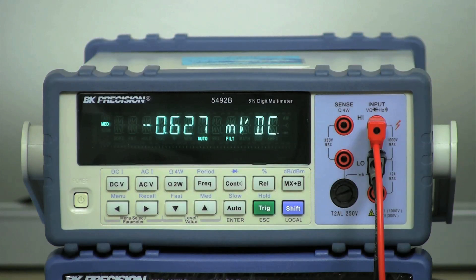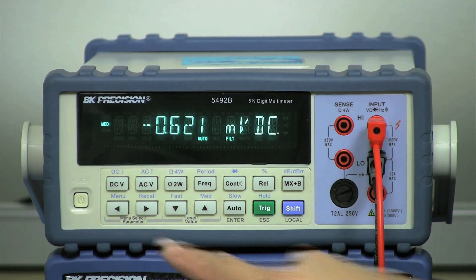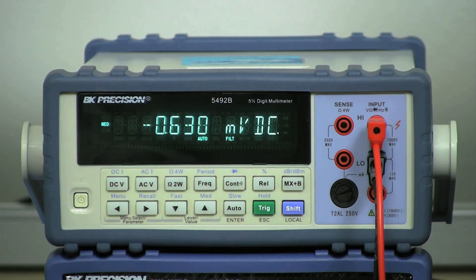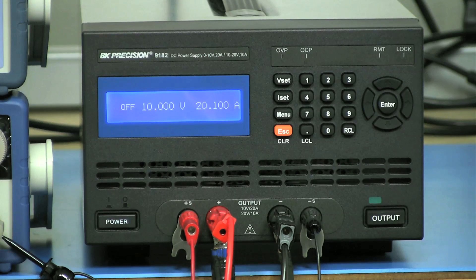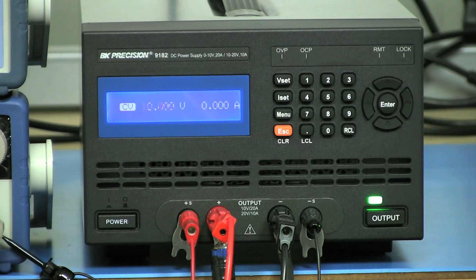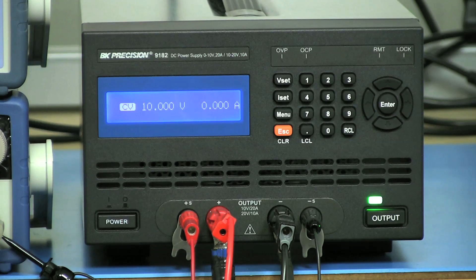Now on the multimeter, I will simply press DCV to select DC voltage measurement function. Without the load turned on, I will press the output button of the 9182 to turn on the power supply. Then read the voltage on the multimeter.